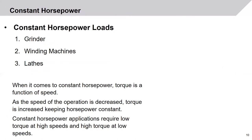Constant horsepower loads include grinders, winding machines, and lathes. When it comes to constant horsepower loads, torque is a function of speed: as the speed of the operation is decreased, torque is increased, keeping horsepower constant. Constant horsepower applications require low torque at high speeds and high torque at low speeds.